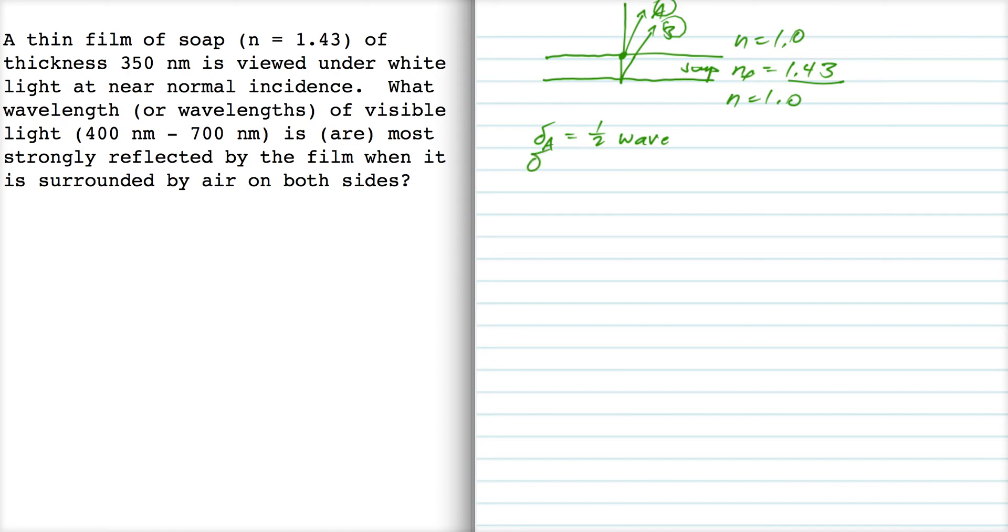Wave B has two sources of path difference or phase shift, right? It's got this reflection. However, the reflection, it's in the soap and it's reflecting off of air,